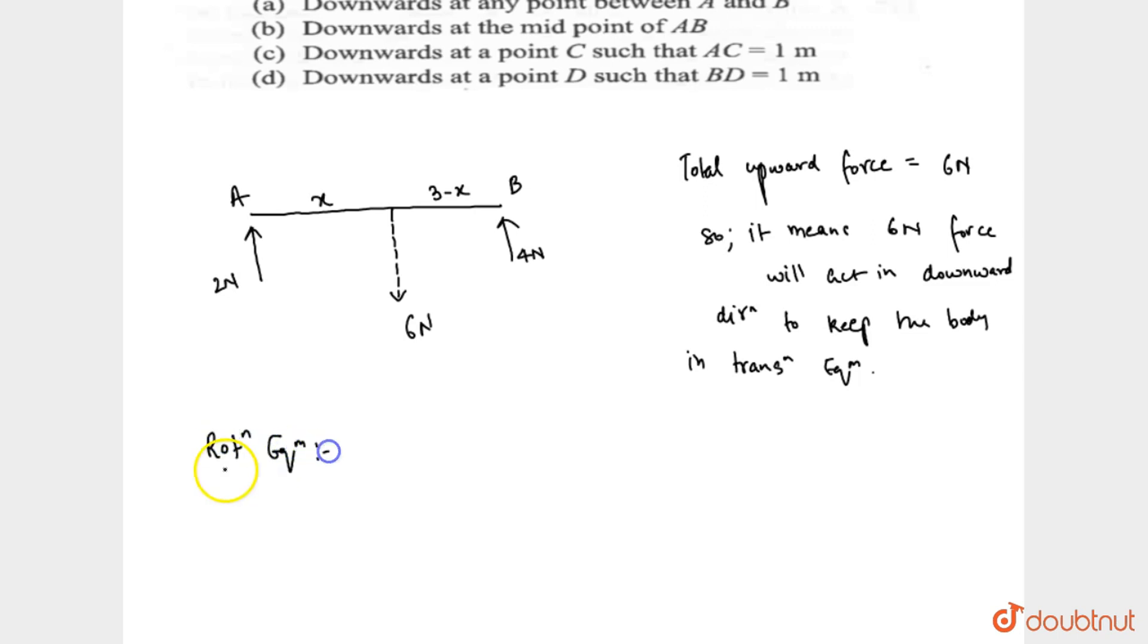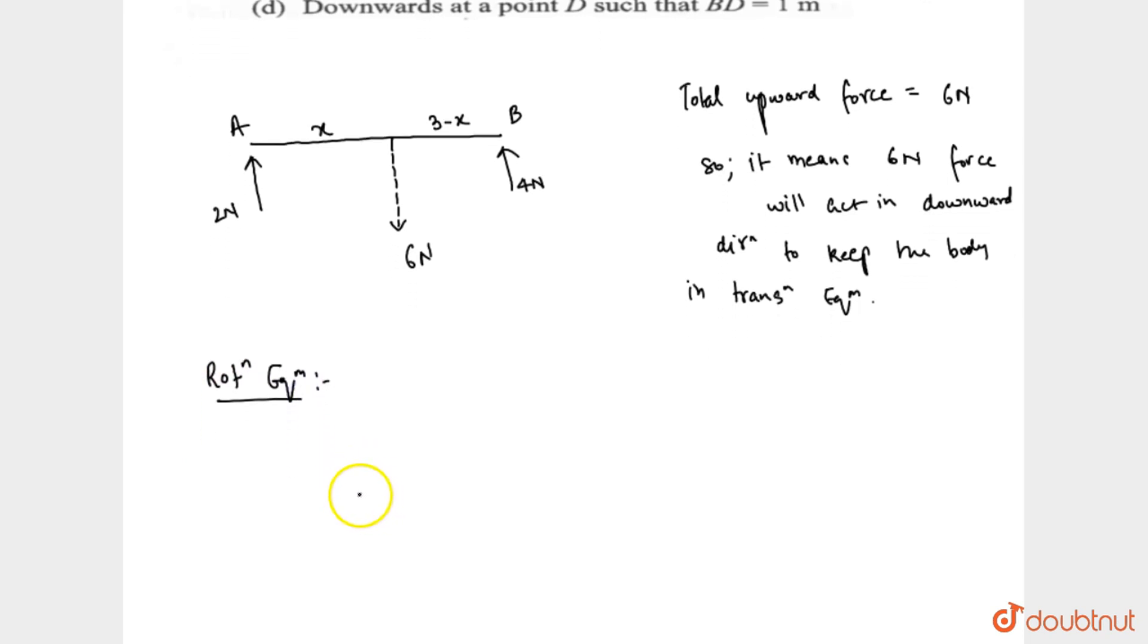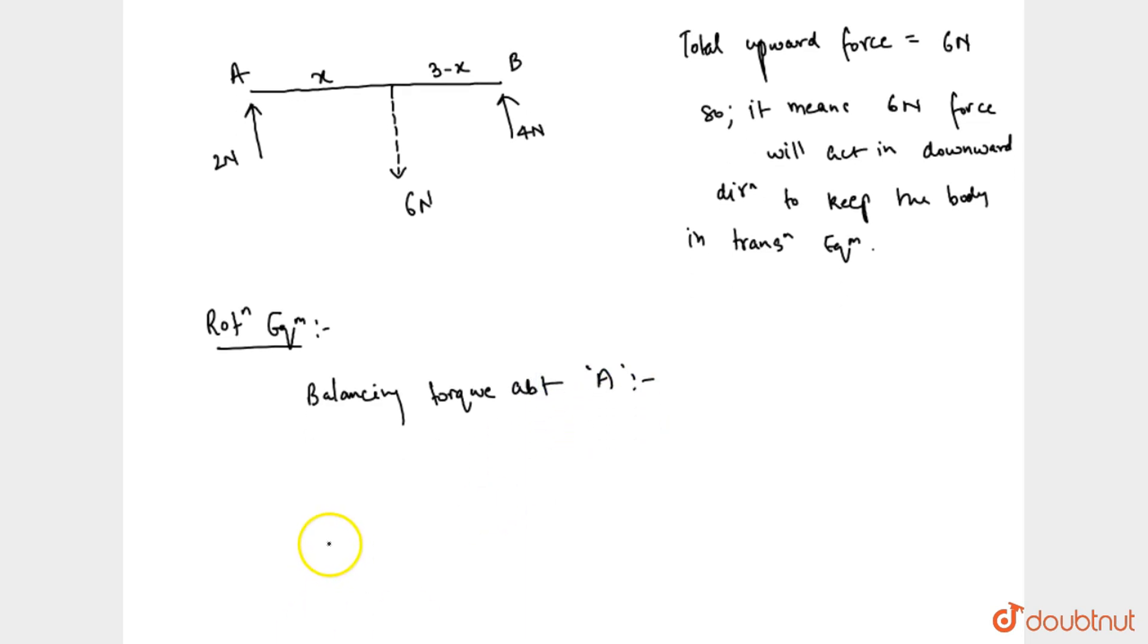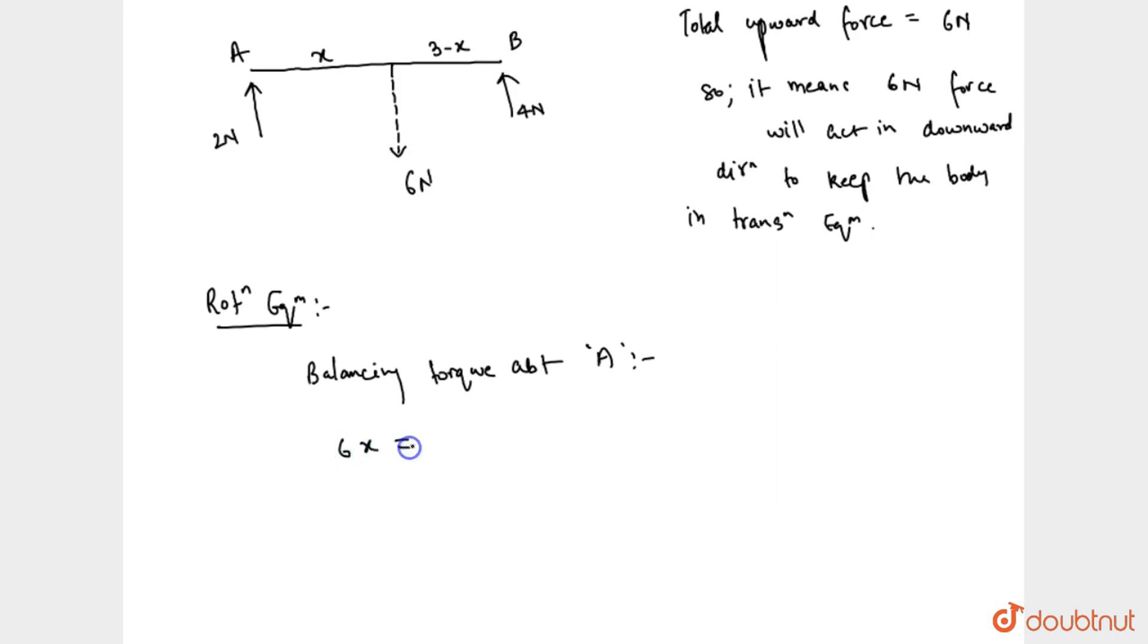Now rotational equilibrium की बात करते हैं. Rotational equilibrium में अपन balancing torque about A. So यह हो जाएगा 6 into x is equals to 4 into 3. यह जाएगा 12 by 6 is equals to 2 meter. So this is 6 Newton force.